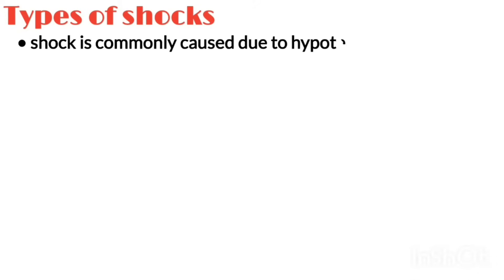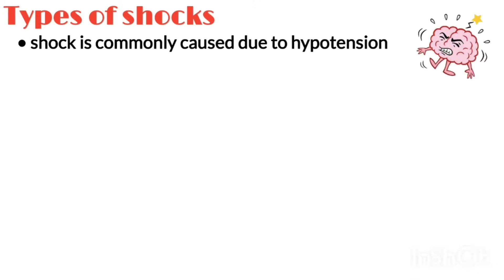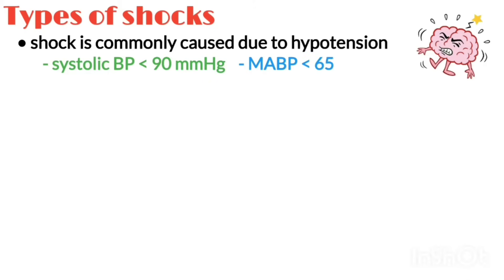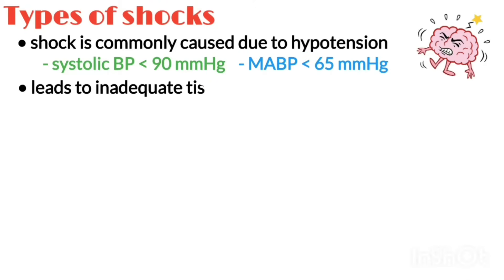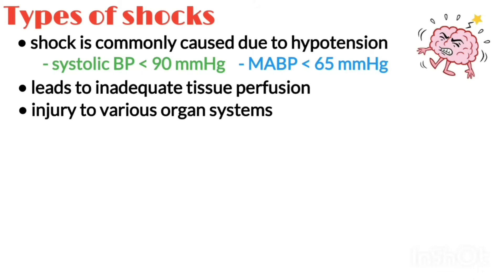Shock is most commonly caused due to hypotension, which is a systolic blood pressure less than 90 mmHg or mean arterial pressure less than 65 mmHg, that leads to inadequate tissue perfusion and injury to various organ systems like the brain,